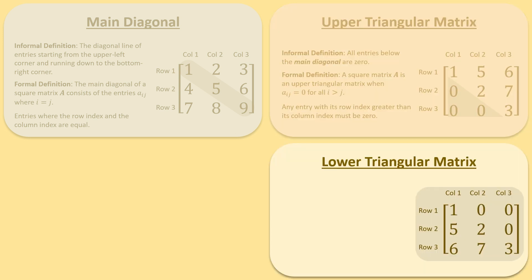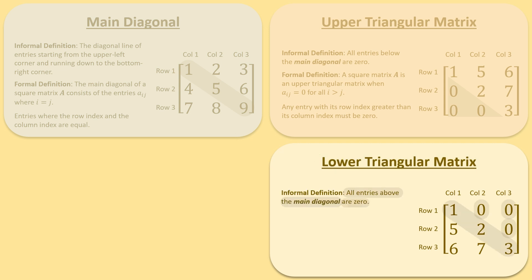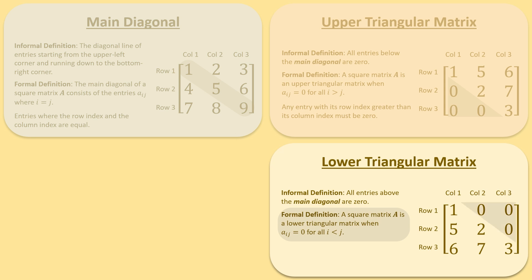A square matrix A is lower triangular if all the entries above the main diagonal are zero. Formally, a square matrix A is a lower triangular matrix when the entries A sub i j are zero for all i less than j. Any entry with a row index less than its column index must be zero.